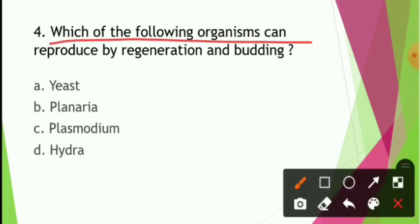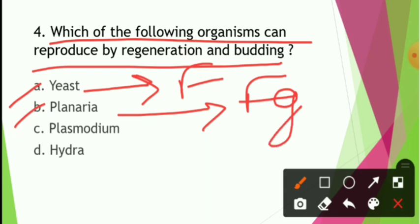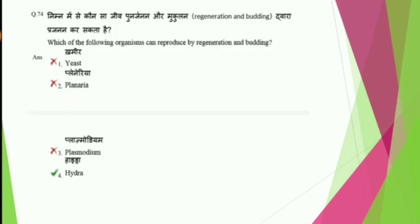Which of the following organisms can reproduce by both regeneration and budding? Options include yeast and planaria. Yeast's process is fermentation. Fragmentation is in planaria — it divides into smaller and smaller pieces. Plasmodium undergoes multiple fission. For binary fission, amoeba; for multiple fission, plasmodium. Hydra reproduces by regeneration and budding. So the answer is option D — Hydra.